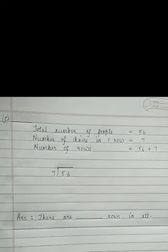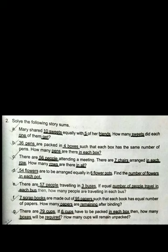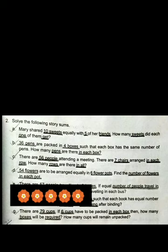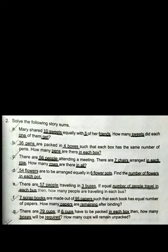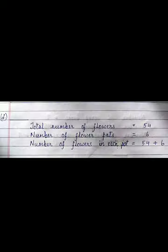When you finish, you will draw a long line. Question D: 54 flowers are to be arranged equally in 6 flower pots. Find the number of flowers in each pot. Total number of flowers is equal to 54, number of flower pots is equal to 6, number of flowers in each pot is equal to 54 divided by 6. You will divide 54 by 6 and write the answer you get in the quotient.